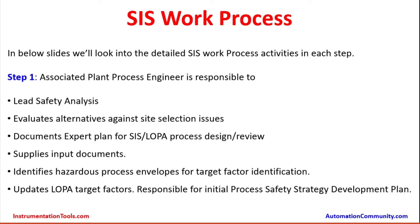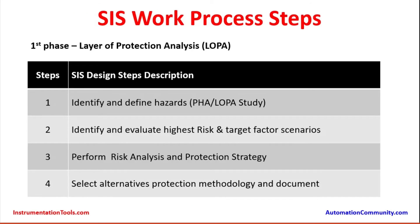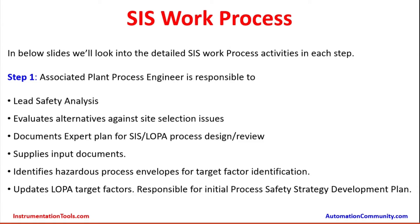The first two phases and all eight steps will be discussed in detail in the following slides. In step one, the associated plant process engineer is responsible for leading the safety analysis — this is the first step: identify and define hazards. The process engineer is responsible for leading safety analysis and evaluating alternatives against site selection issues, and for documenting the expert plan for SIS, LOPA, process design, and process reviews.